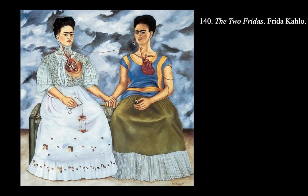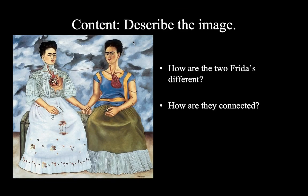That leads us to 'The Two Fridas,' which is the image in our 250. There are obviously two Fridas here, but if you pay close attention, they are dressed differently and even their skin color is different. Notice how they are connected — they're holding hands, but also their hearts are exposed and there's an artery connecting both of them. So they're connected through their heart, which symbolizes their intention, their love, their emotional content.